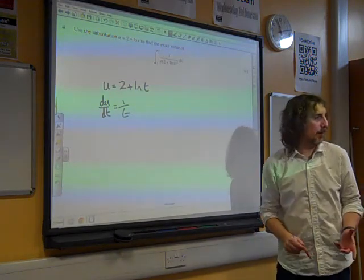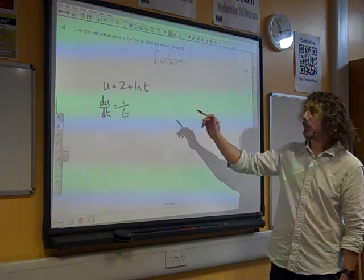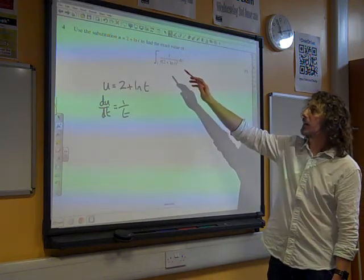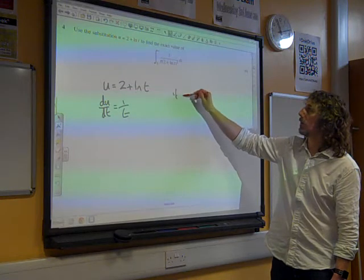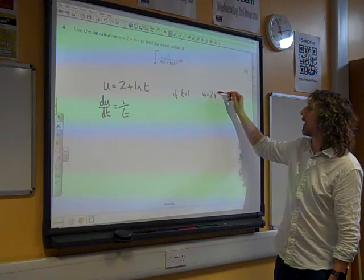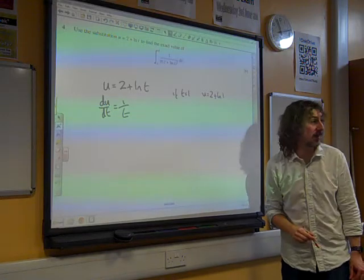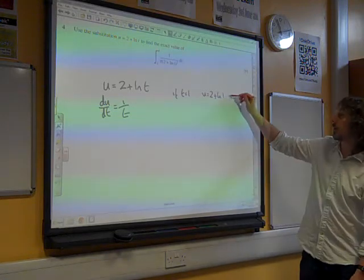Let's think about the limits as well before we actually work out how we can substitute things in. When t equals 1, u is 2 + ln 1, well natural log of 1 is 0, so that's u equals 2.